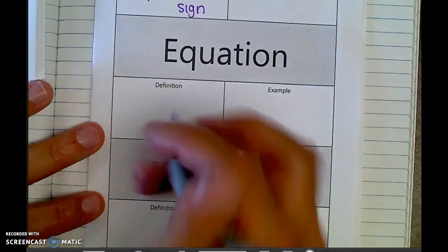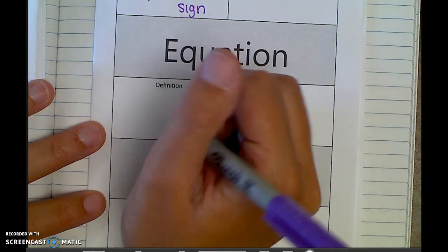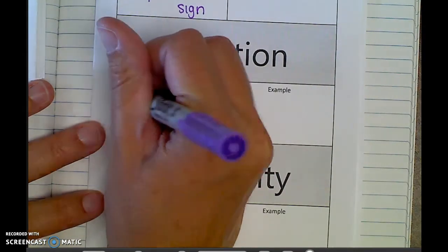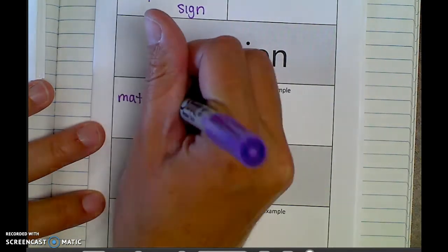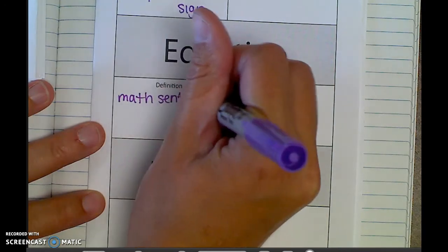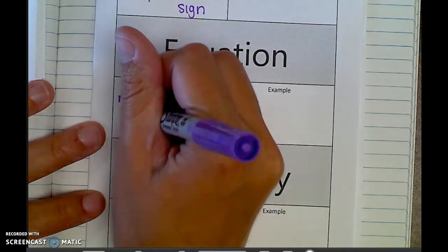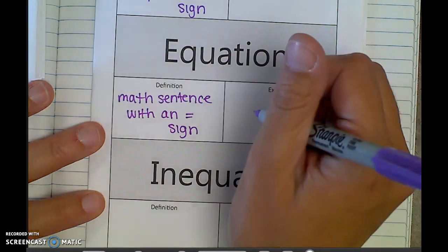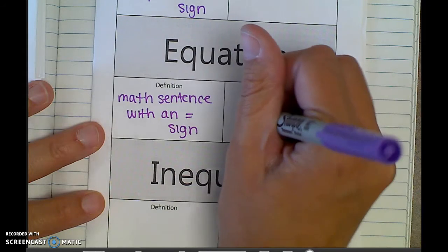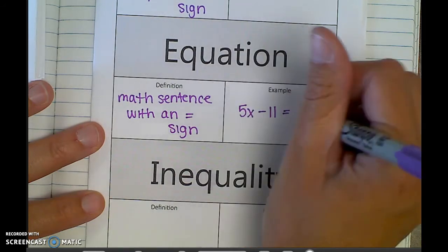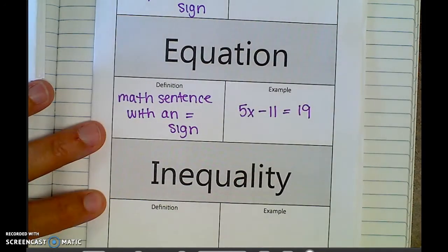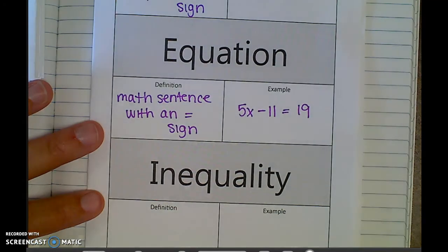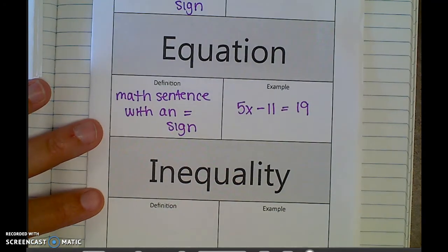An equation is a math sentence with an equal sign. So an example of that could be 5x minus 11 equals 19. And sometimes equations you can solve and sometimes you can't. You don't need to solve that one there. It's an equation because it has an equal sign.